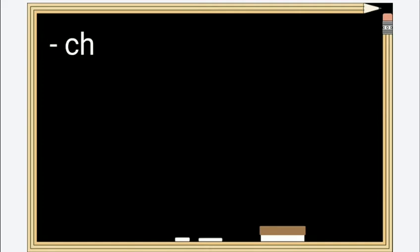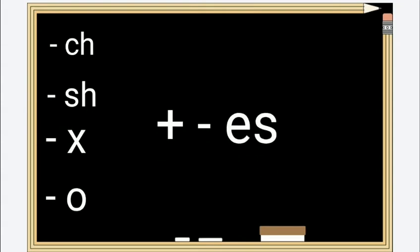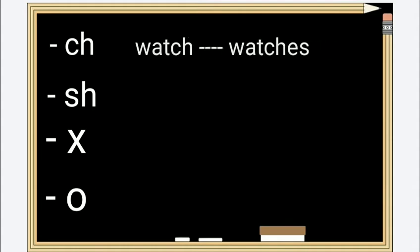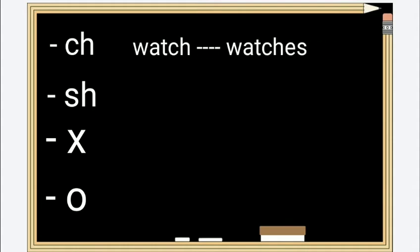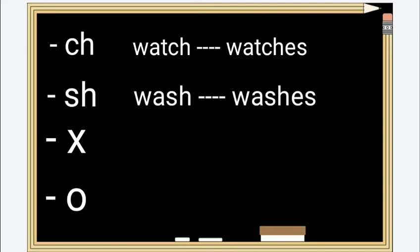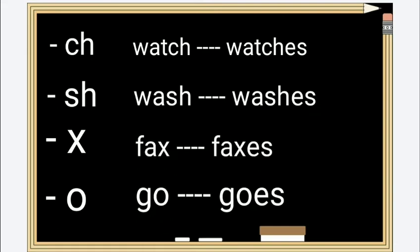For subjects he, she, it — besides adding S, with special verb endings like -ch, -sh, -s, -x, or -o, you have to add -ES. For example: 'watch' becomes 'watches,' 'wash' becomes 'washes,' 'fax' becomes 'faxes,' 'go' becomes 'goes.'